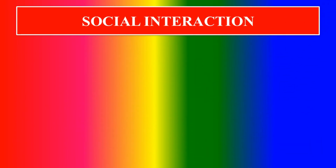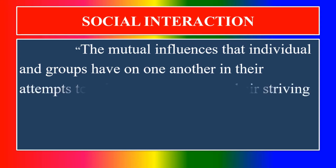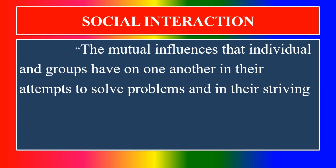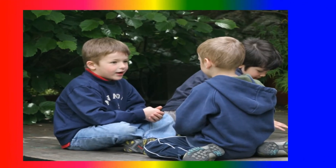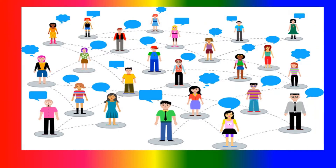What is meant by social interaction? The mutual influences that individuals and groups have on one another in their attempt to solve problems and in striving towards goals. Children interact and play — that is social interaction. Modern-day social interaction also occurs through social media.